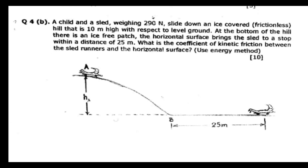Let's have this question. A child and a sled weighing 200 Newton slide down an ice-covered frictionless hill - meaning there is no friction. So this is going to be conservation of energy. They are saying that the hill is 10 meters high with respect to level ground.